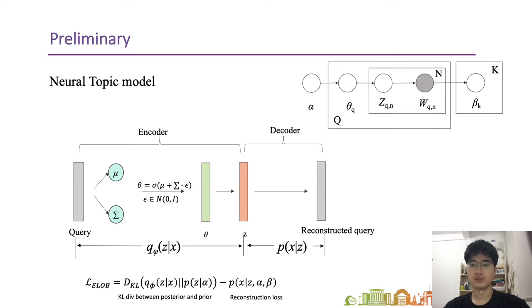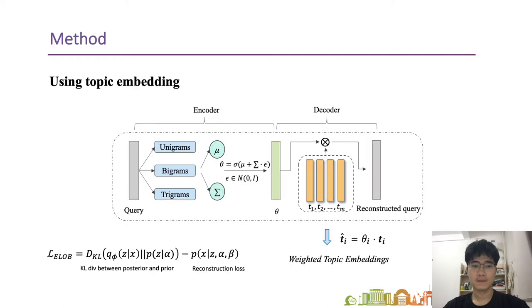The whole framework has two learning targets. The first term aims to match the variational posteriors over the latent variables to the prior distributions, while the second term ensures that the variational posteriors favor the values of latent variables that are good at explaining the data. We further extend this by using embeddings to represent each topic, which helps to calculate topic relatedness. The topic embeddings are used to reconstruct the input text and measure topic relatedness in the matching framework.